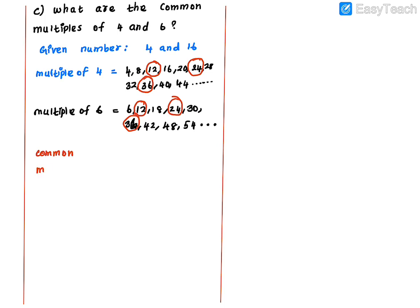So the common multiples of 4 and 6 are: 12, 24, 36, and so on continuously — represented by three dots (etcetera).